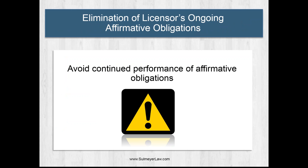What Section 365(n) still does is allow the licensor to eliminate any ongoing affirmative obligations. While it does not prevent the intellectual property licensee's continued use of the property, it permits the licensor to avoid continued performance of affirmative obligations under the agreement. These might include obligations to train the licensee's personnel, provide marketing or promotional functions, technical service, maintenance functions, defense against infringement, or other obligations. So those affirmative obligations can be eliminated, allowing a debtor-licensor to get out from under those obligations, although Section 365(n) prevents the licensee from having the IP stripped out from under it.